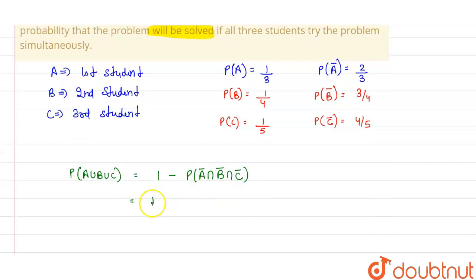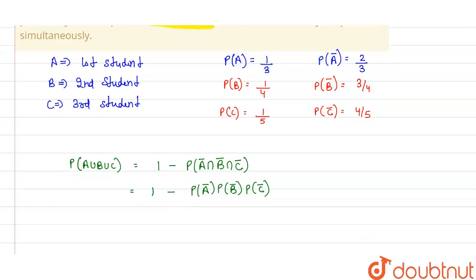So this is 1 minus P of A bar into P of B bar into P of C bar. As we say that all are independent to each other, there won't be any connection between them. That's why we wrote probability of A bar into probability of B bar into probability of C bar here.